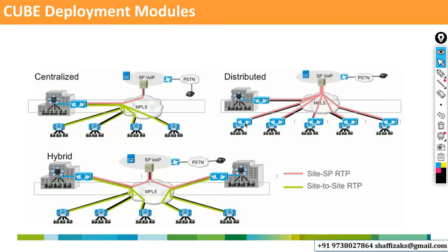Distributed deployment means: at every branch office you place one CUBE router. For example, Bangalore office has one CUBE connected directly to the service provider — that is distributed deployment. Most of the time you see this type of deployment. The CUCM cluster may be centralized, but the CUBE routers are placed at every location.